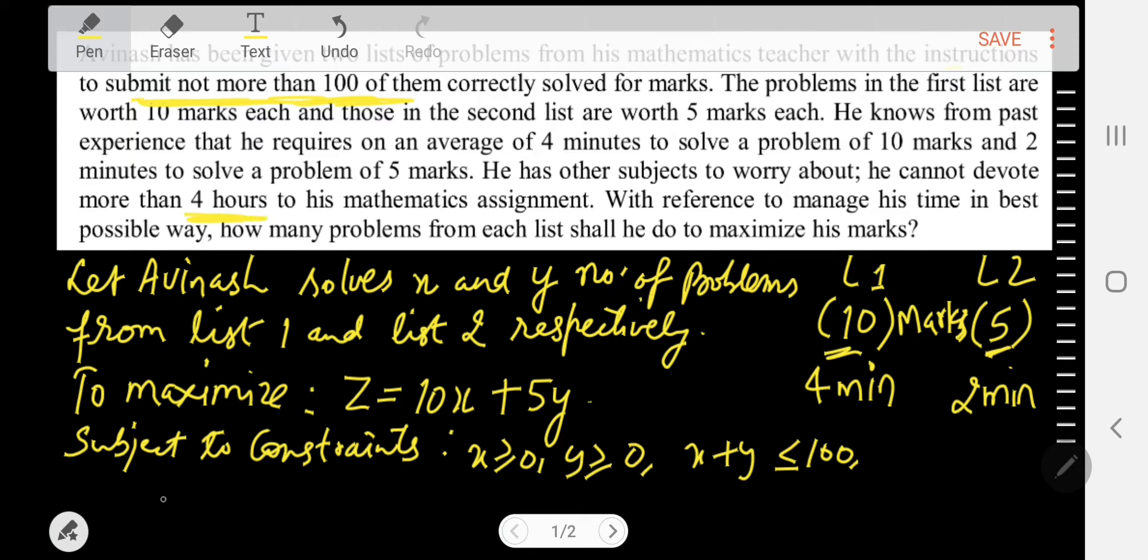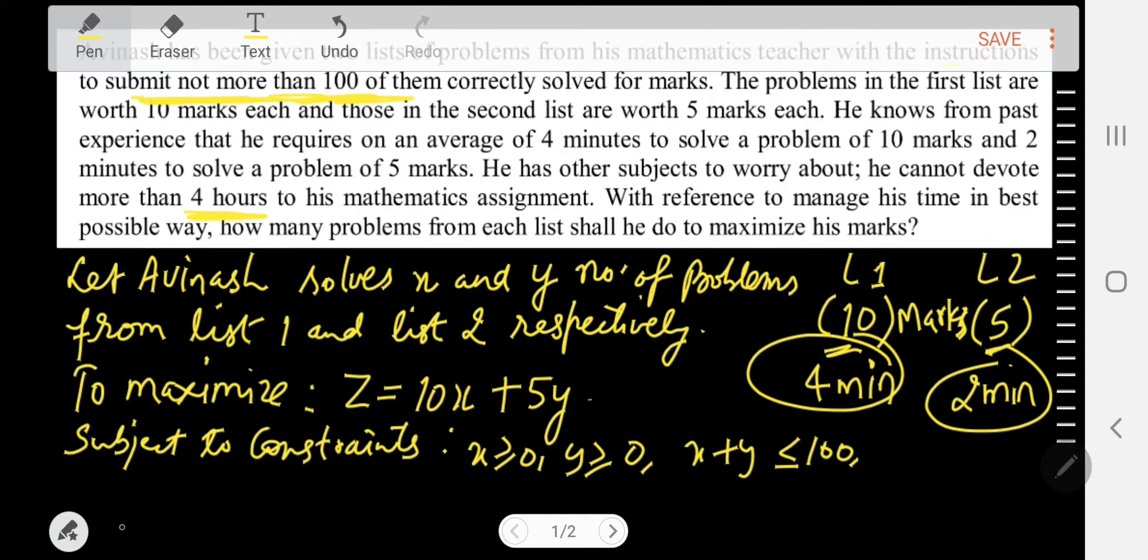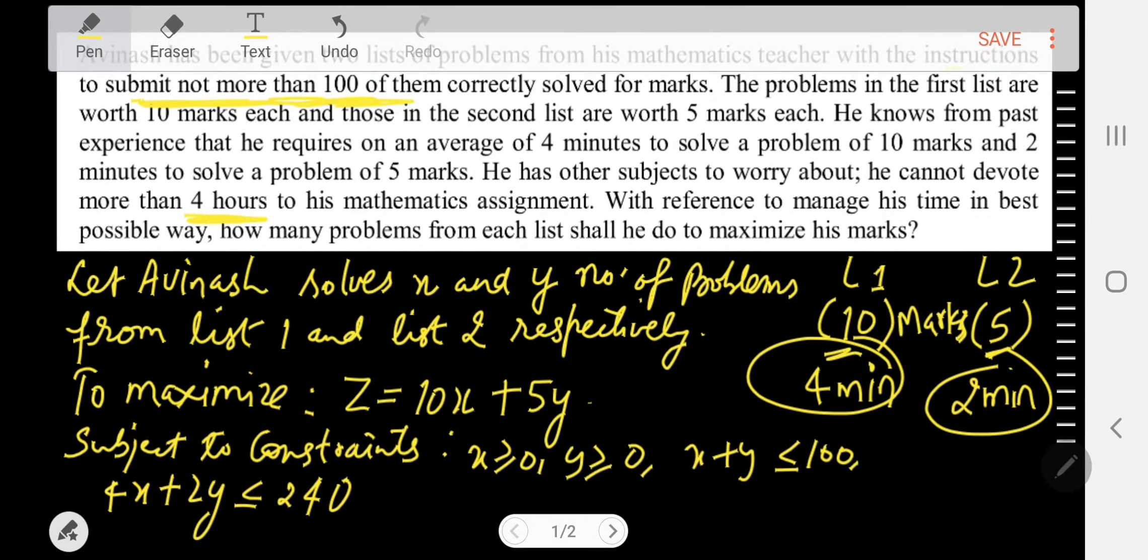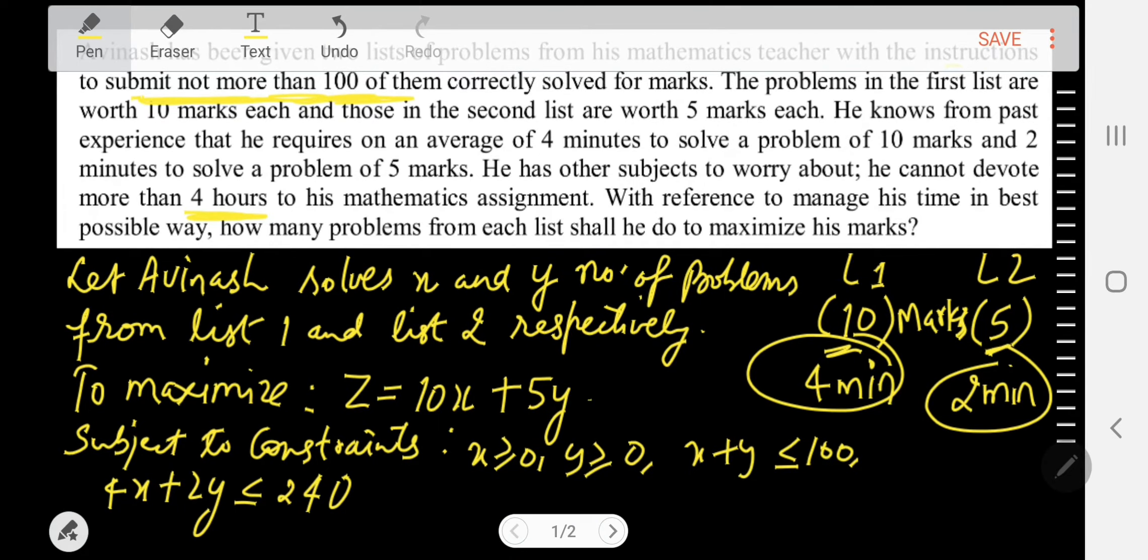He has a time limit of 4 hours, so therefore each problem from List 1 will take 4 minutes and from List 2 it will take 2 minutes. So therefore 4x + 2y will be less than or equal to 4 hours, means 4 times 60 minutes, that is 240 minutes. On simplifying this, we will get 2x + y less than or equal to 120.